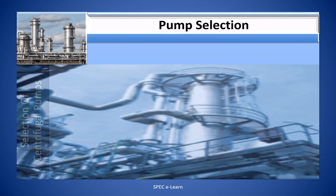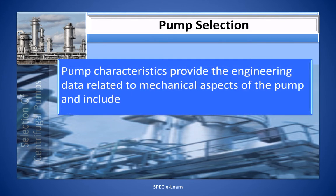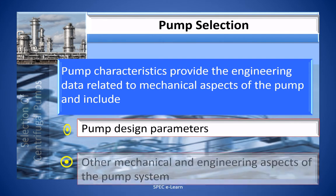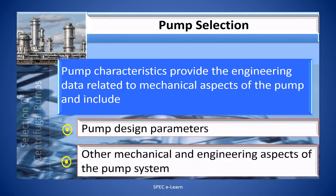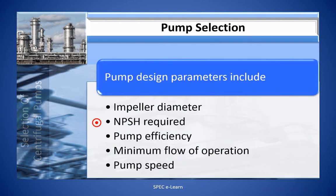Pump characteristics provide engineering data related to the mechanical aspects of the pump and include pump design parameters and other mechanical and engineering aspects of the pump system. Among the pump design parameters, those important from the process requirement and pump reliability viewpoint are impeller diameter, NPSH required, pump efficiency, minimum flow of operation, and pump speed.